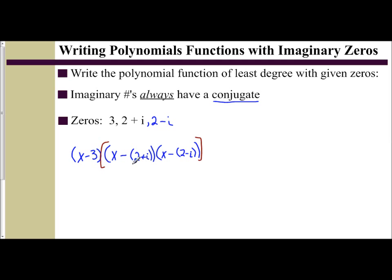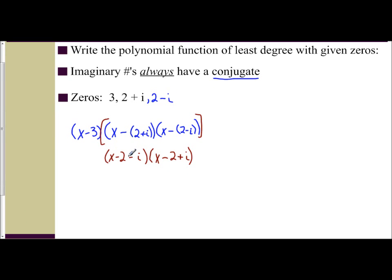Distributing: x minus the quantity 2 plus i becomes x minus 2 minus i, and x minus the quantity 2 minus i becomes x minus 2 plus i. We still need to multiply by x minus 3 afterward. Since we're dealing with a polynomial function, it must be real — all the i terms must cancel. Let's organize our work carefully.